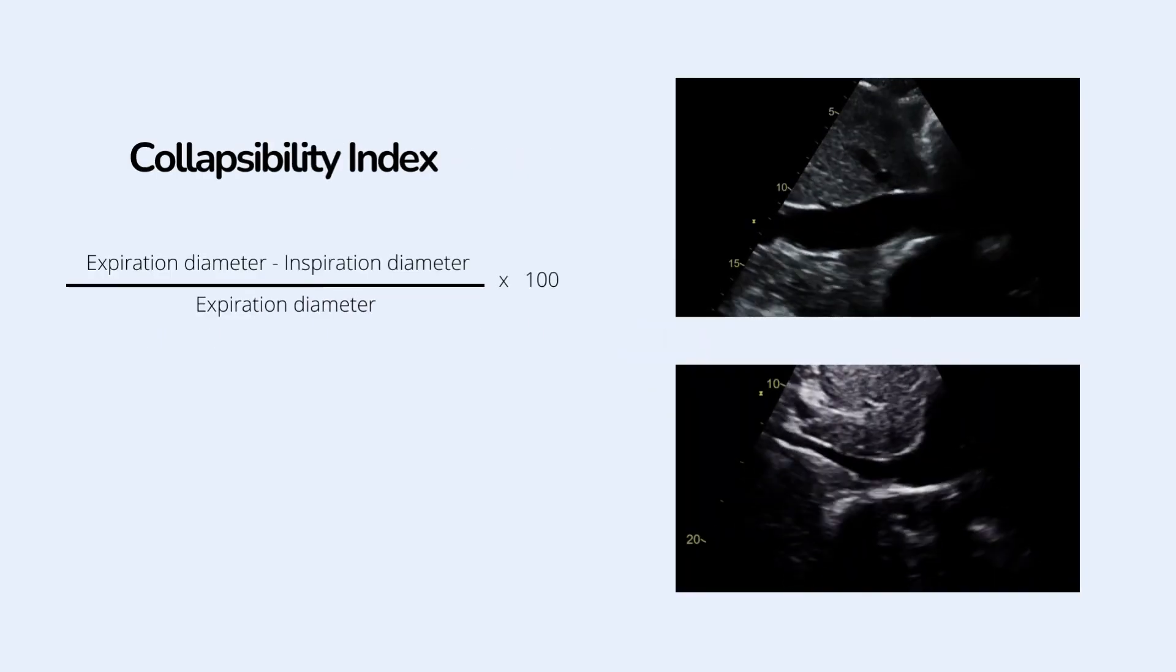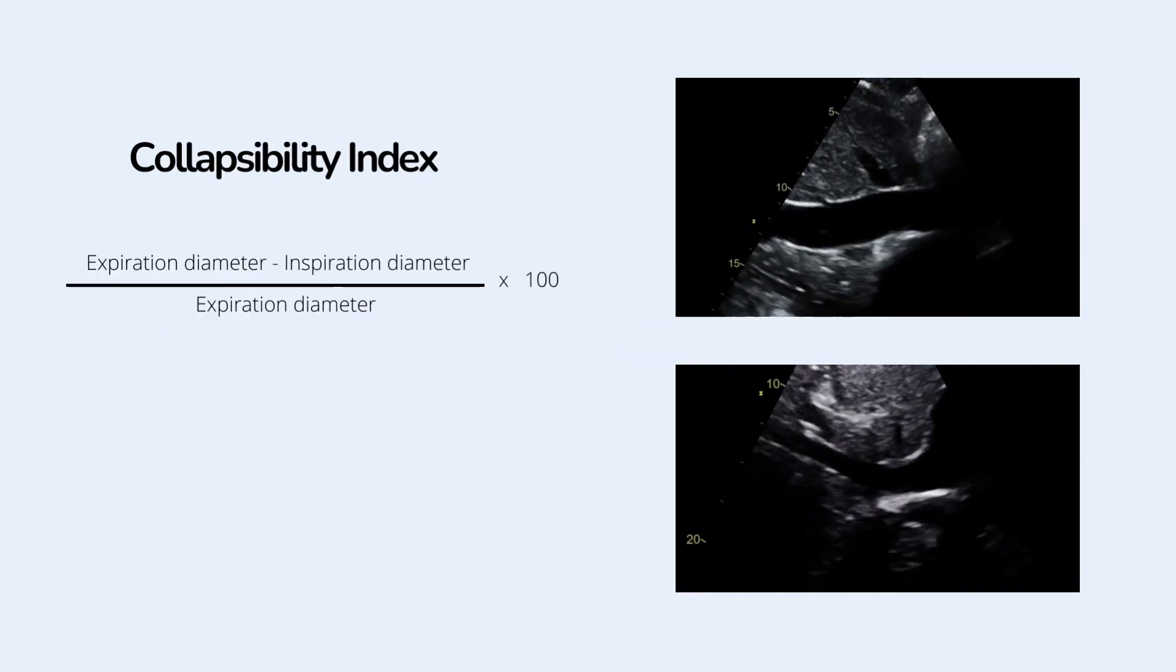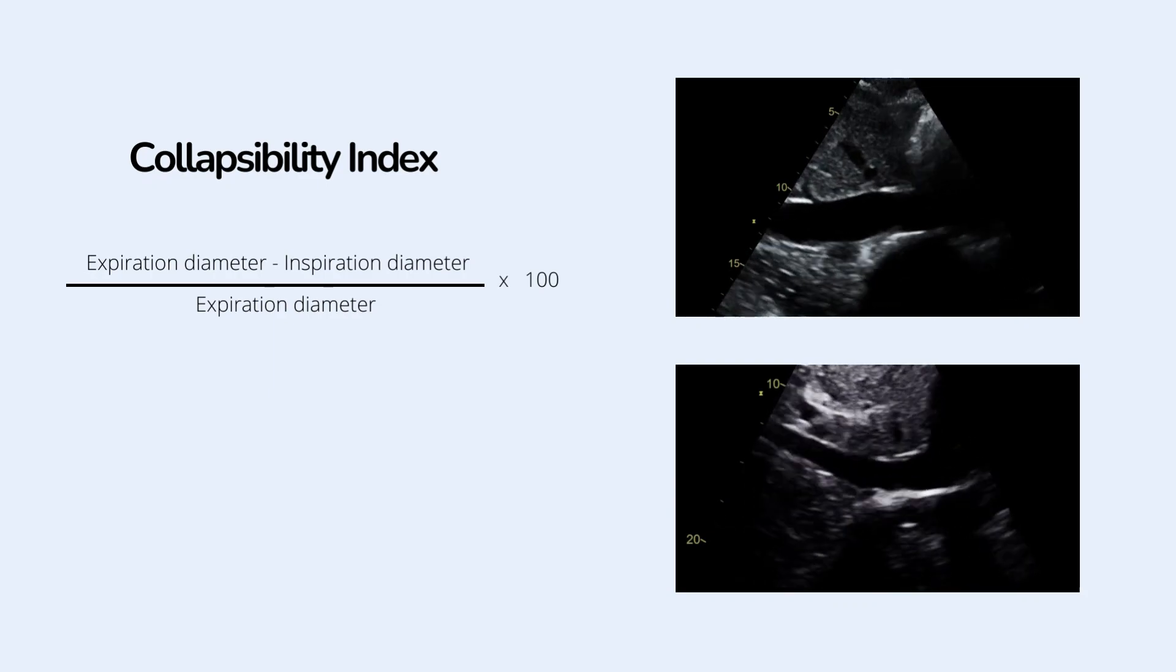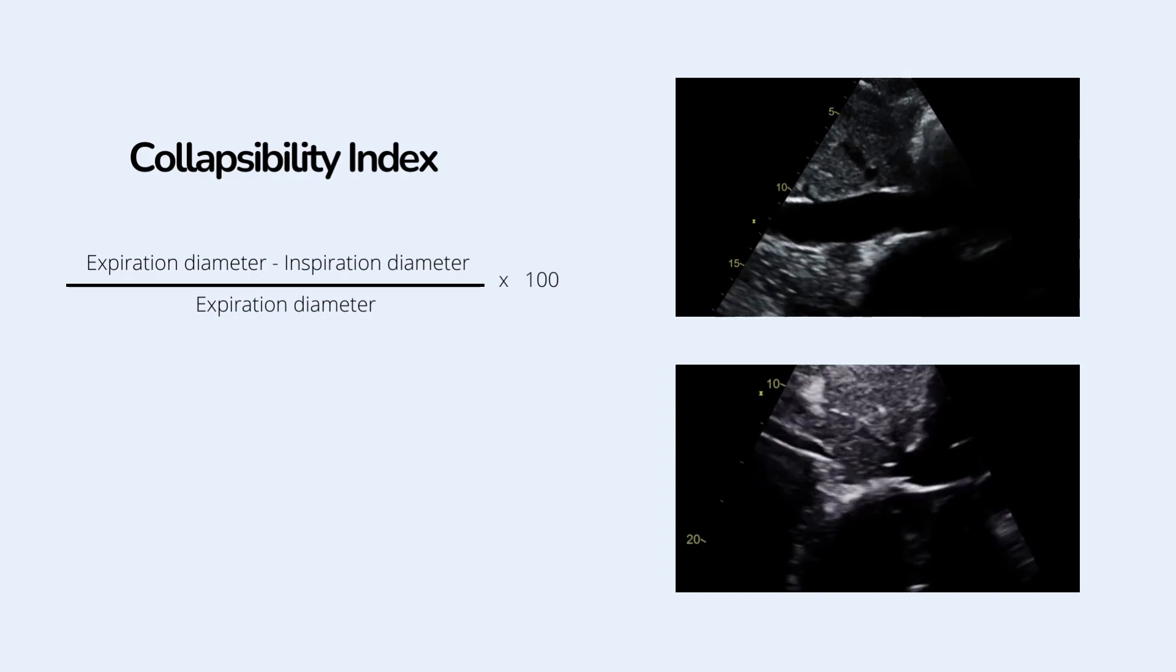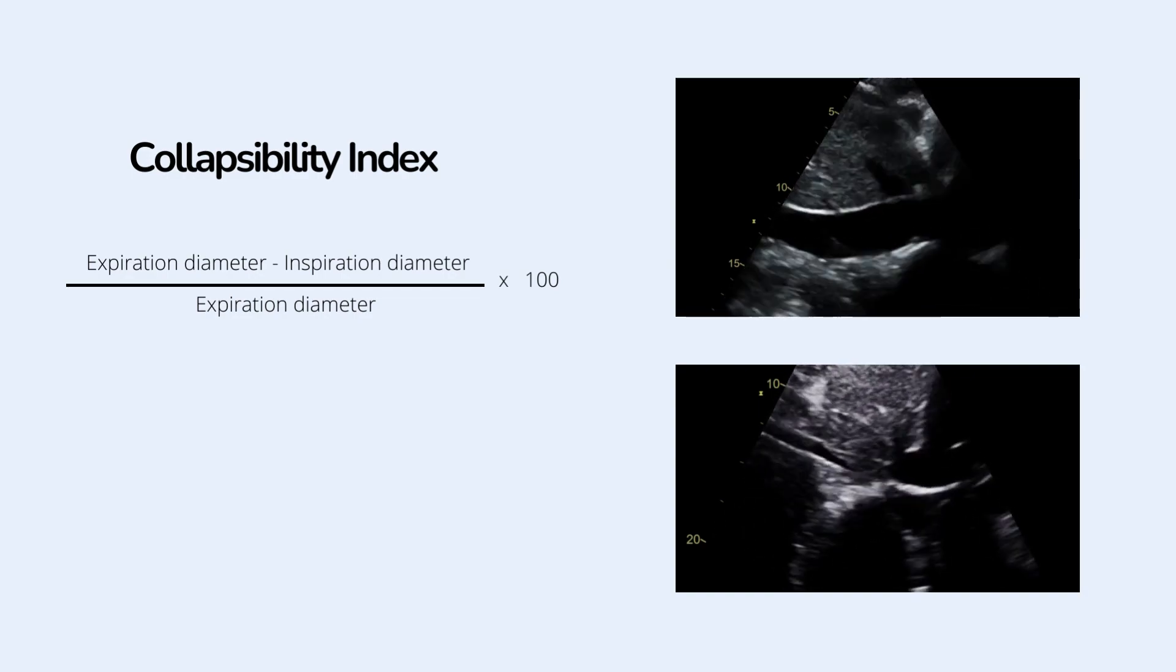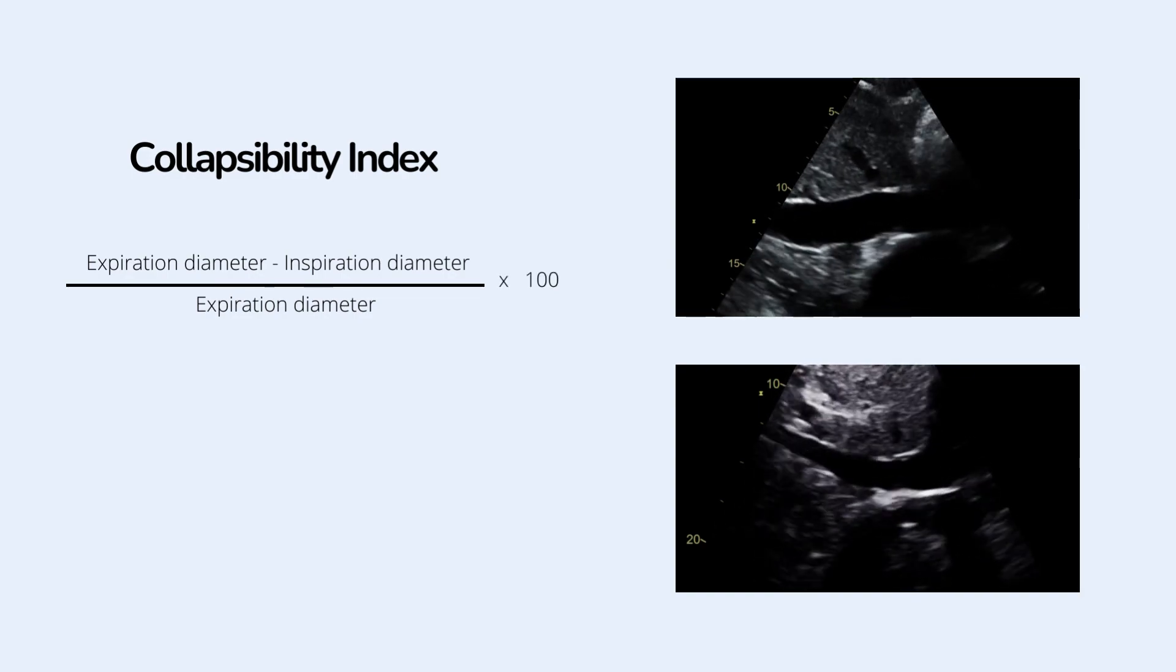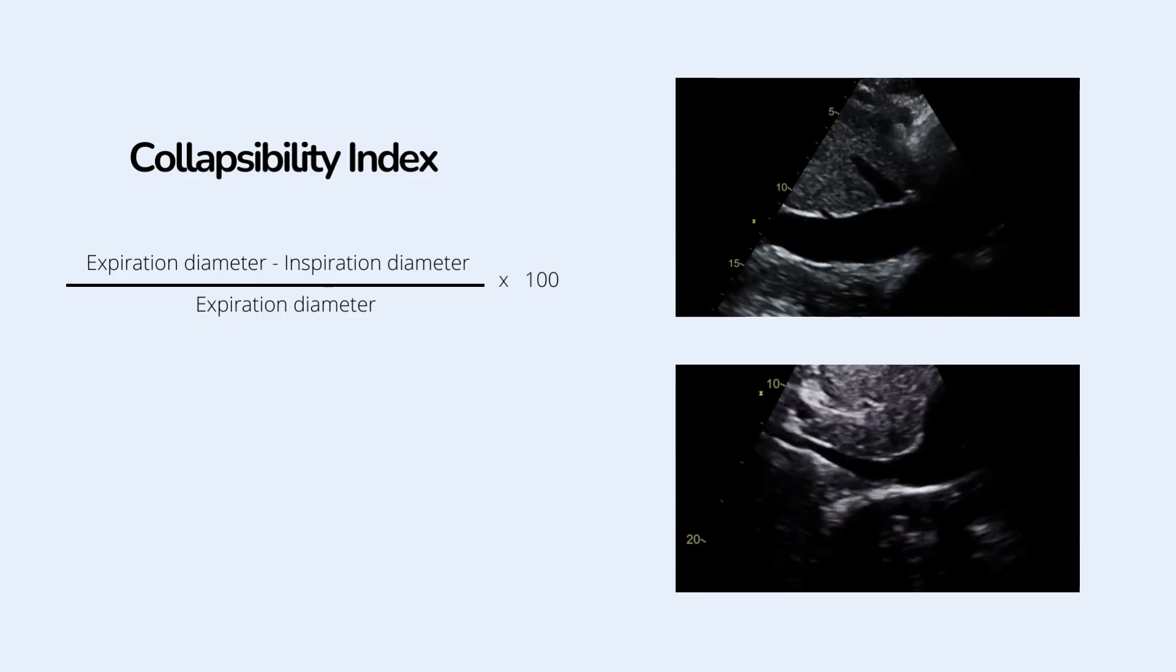The formula for computing collapsibility index: Always remember we should measure on maximum diameter of both respiratory cycles. Collapsibility index is diameter on expiration, minus diameter on inspiration, divided by diameter on expiration.